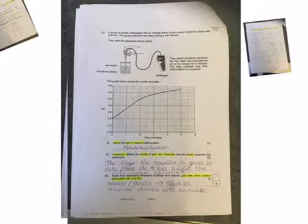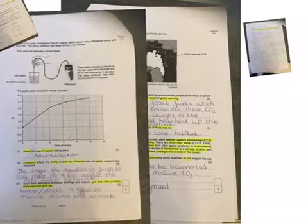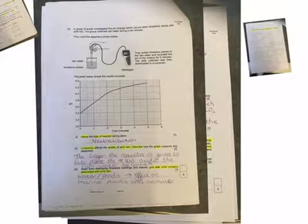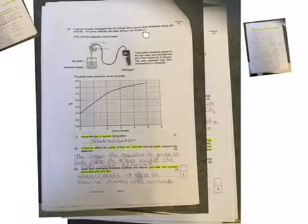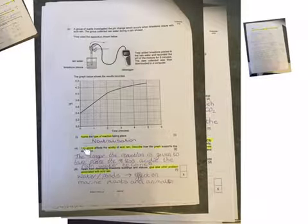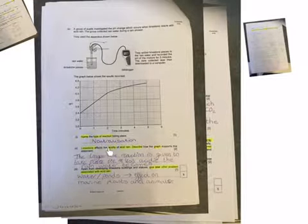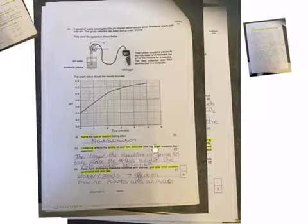Moving on to part B, that was looking at what happens to the pH of limestone when it reacts with acid rain. Name the type of reaction. Limestone is an alkali, acid rain is an acid, so that's a neutralization reaction. As you can see the pH is increasing, it's neutralizing each other, hopefully at the end it goes up to pH 7 forming water. The longer a reaction is given to take place, the less acidic the acid rain becomes. It's starting to neutralize.